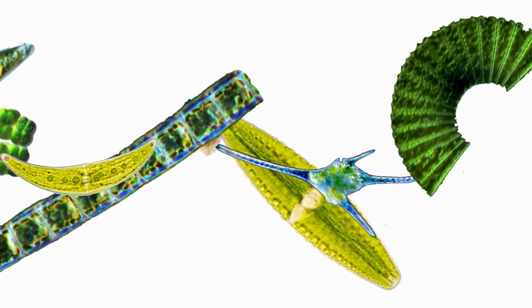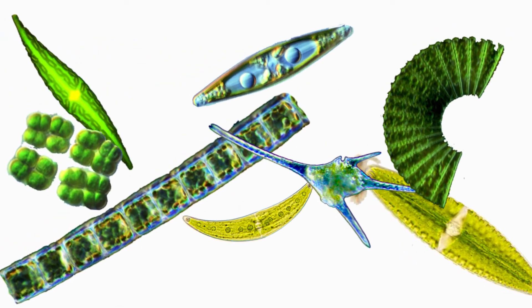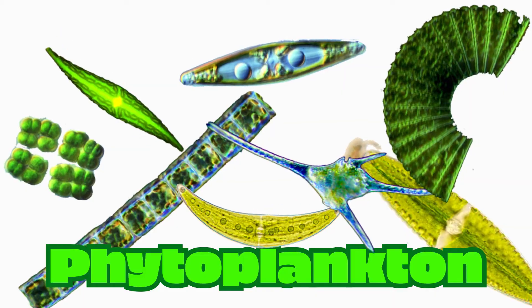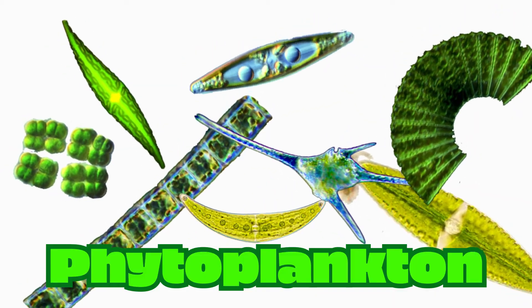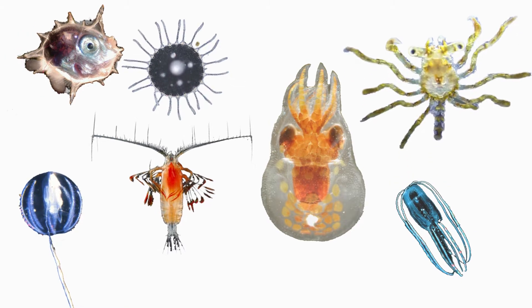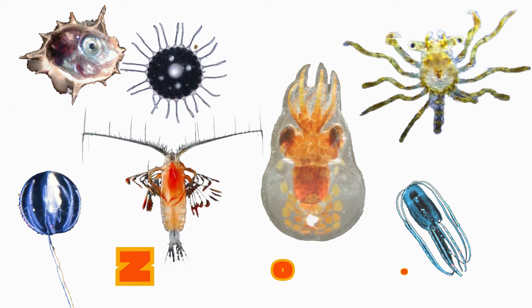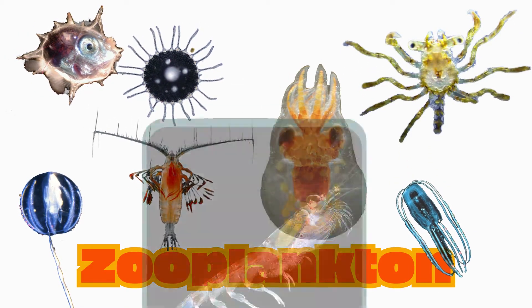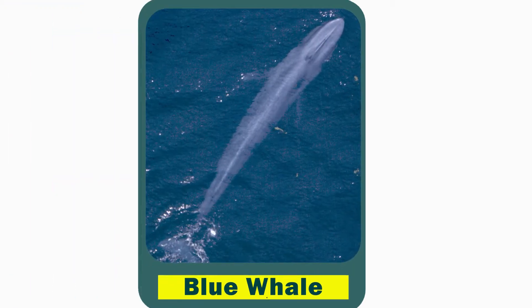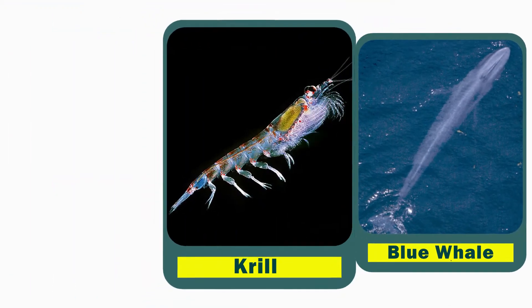In the ocean, the producers are mostly these single-celled algae dudes called phytoplankton. Like plants, they produce food using solar energy. The phytoplankton are often eaten by the animal kind of plankton called zooplankton. A krill is a very famous kind of zooplankton because they get eaten by earth's largest animals, the blue whale. So there's an ocean food chain.